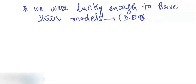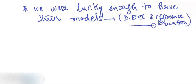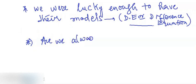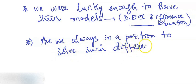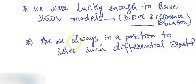If the system is continuous then it is going to be either a partial differential equation or a differential equation; if it is discrete then it is going to be a difference equation. Even if we are lucky enough to model them, there is another interesting question: are we always in a position to solve such differential equations which model them? Interestingly, we are sometimes unable to — for example, the three body problem. Many nonlinear differential equations are very difficult to solve.